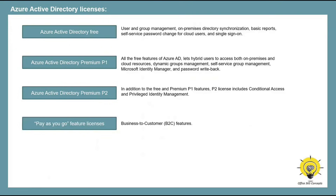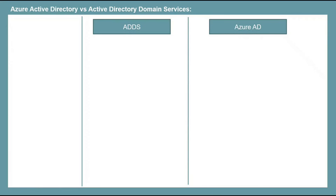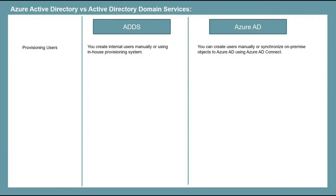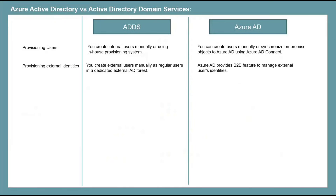Now let's understand the difference between Azure Active Directory and Active Directory Domain Services, or on-premise Active Directory. In on-premise Active Directory, administrators create users manually or they can use an in-house or automated provisioning system. In Azure Active Directory, we can create users manually or synchronize on-premise users to Office 365 using Azure AD Connect. In on-premise Active Directory, external users are created manually as regular users in a dedicated external AD forest, whereas Azure Active Directory provides the B2B feature to manage external identities.